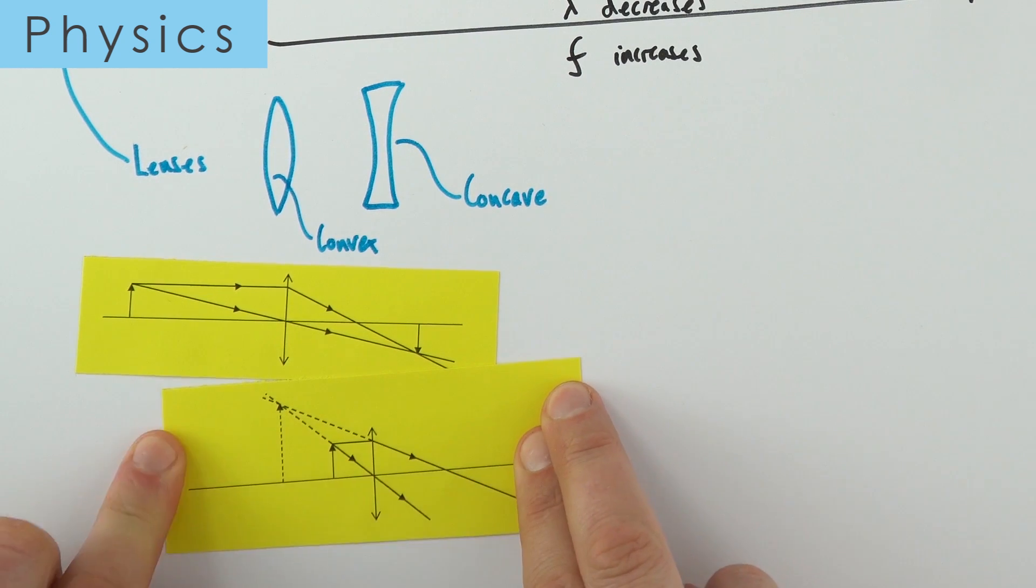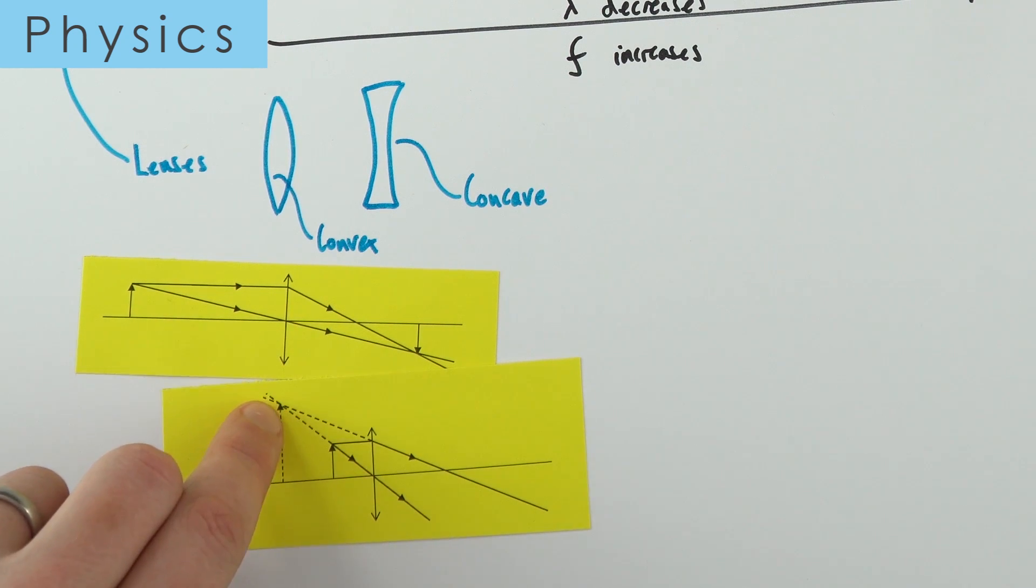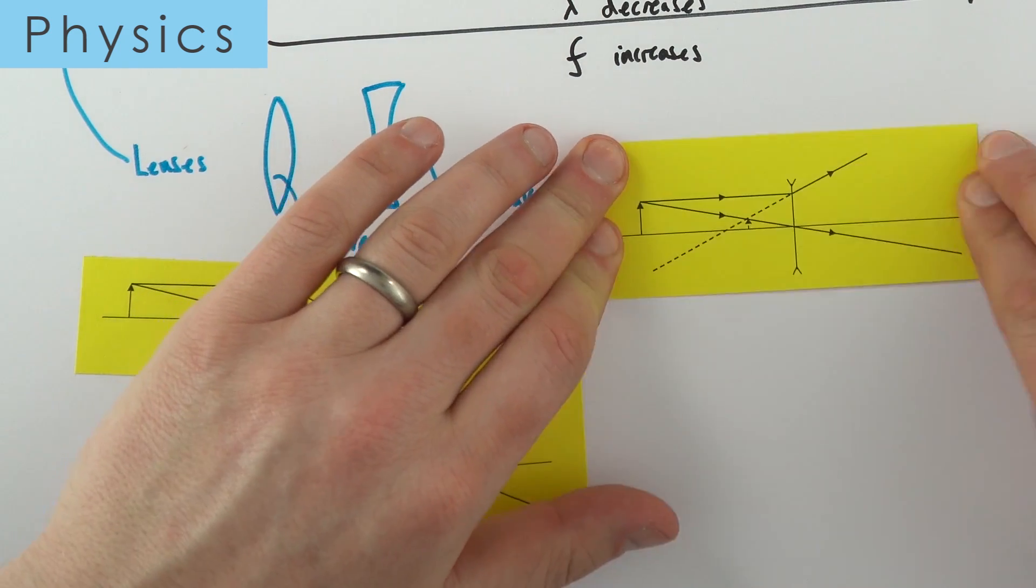If the object is a lot closer, we still construct the ray diagram in the same way. But here, the image is now formed behind the object, and it's actually made out of virtual rays. What we see is a virtual image over here. This one is enlarged, and this is the way that a magnifying glass works.